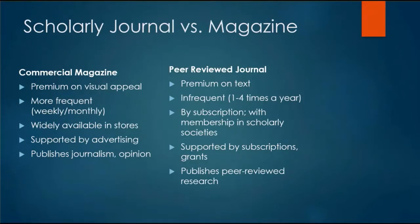Let's compare for a moment a scholarly article versus a magazine that you might find at a bookstore. A commercial magazine has a premium placed on visual appeal — they're often very slickly designed and attractive so that they jump out from the newsstand. But a peer-reviewed journal has its premium placed on text.